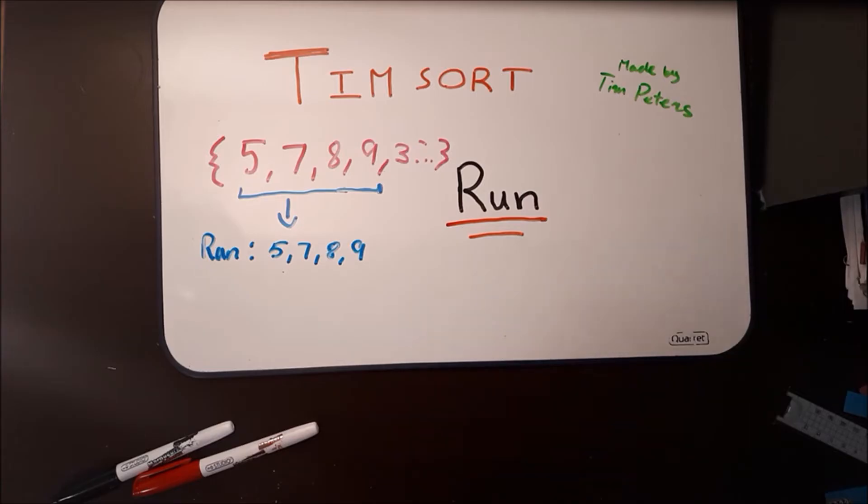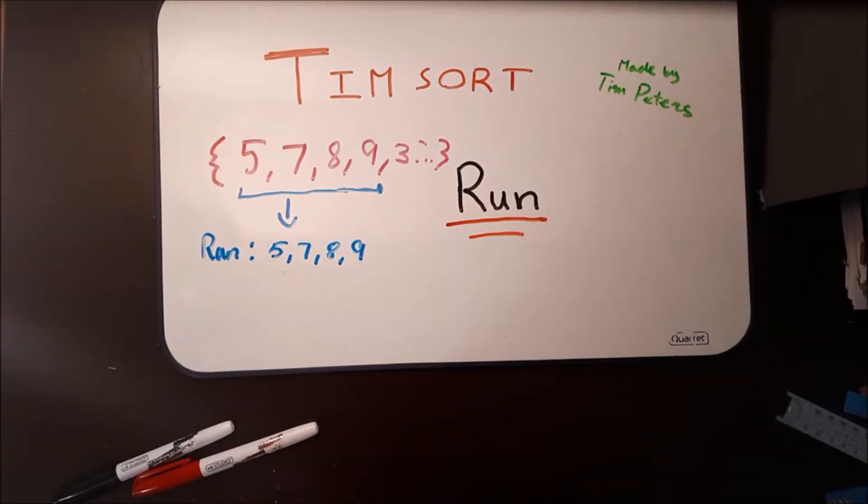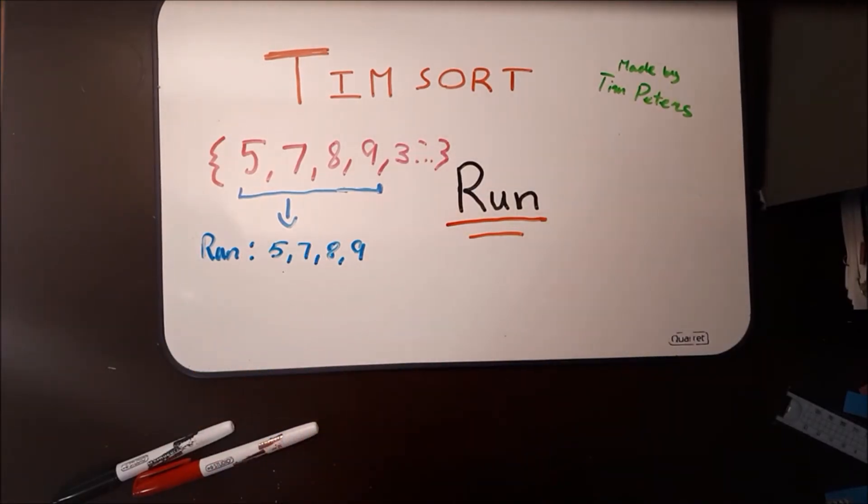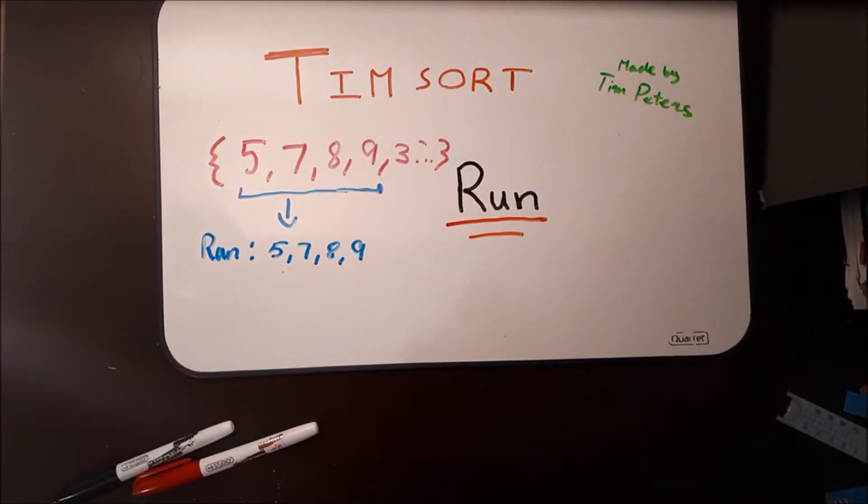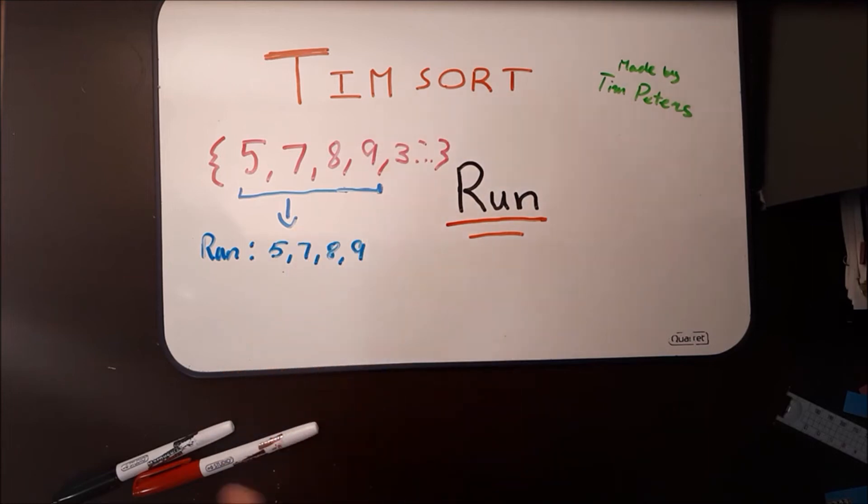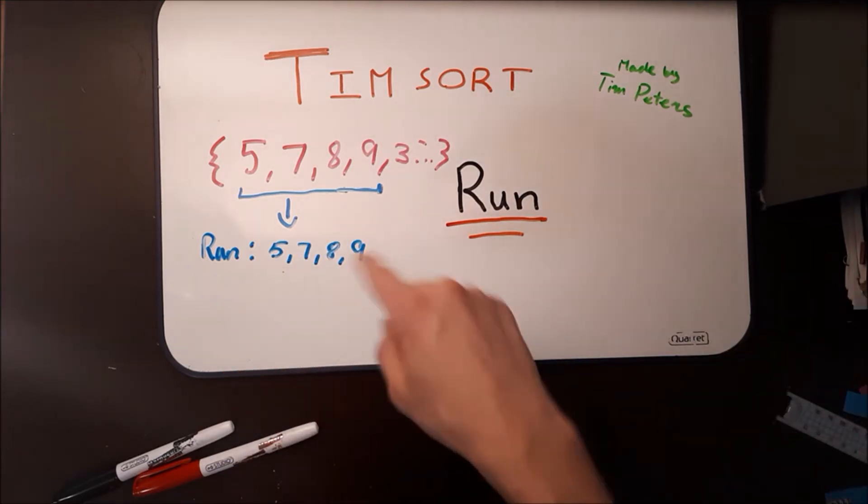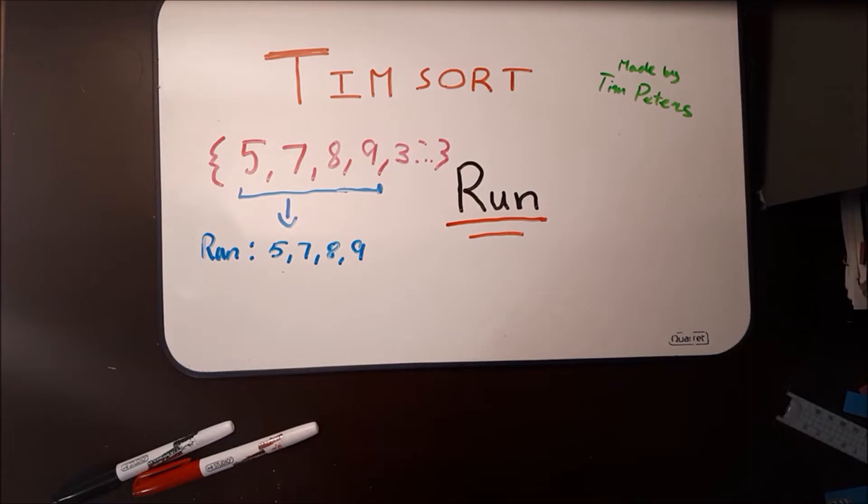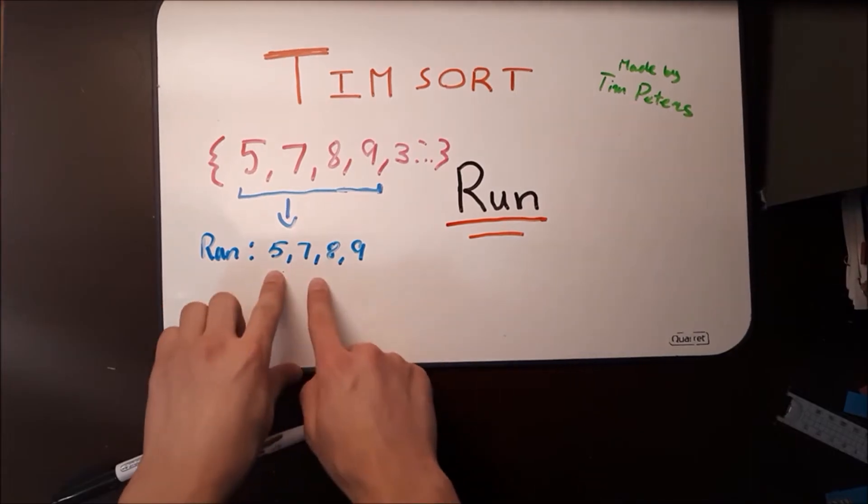Timsort exploits this by looking for runs in the data array that you input. For example, in this data array, you have 5, 7, 8, 9, and 3, and so forth. But in this data, 5, 7, 8, and 9 are in ascending order, whereas 3 is less than any of those. So the run here is 5, 7, 8, 9.